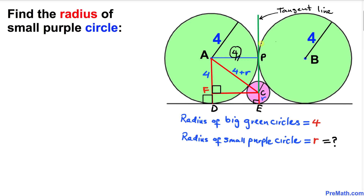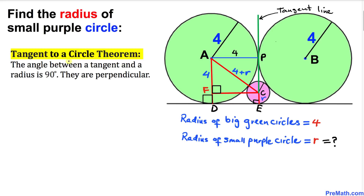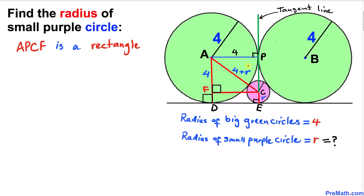One more observation: line segment AP is our radius as well, which is 4 units, and the green line is our tangent line. According to the tangent to a circle theorem, this radius and tangent line are perpendicular — they make a 90-degree angle. We can see that APCF is a rectangle because all of its interior angles are 90 degrees. By the definition of a rectangle, opposite sides are equal, so AP equals FC, meaning FC equals 4.